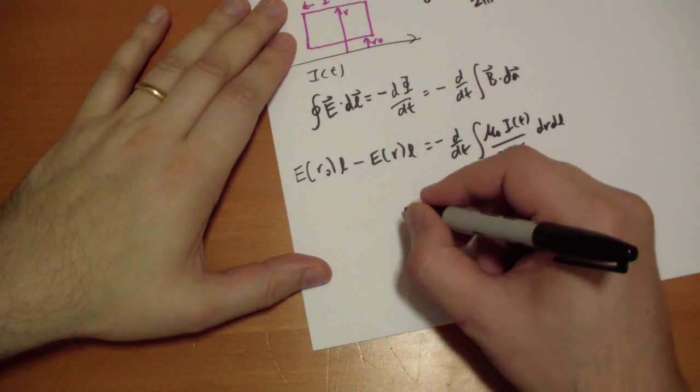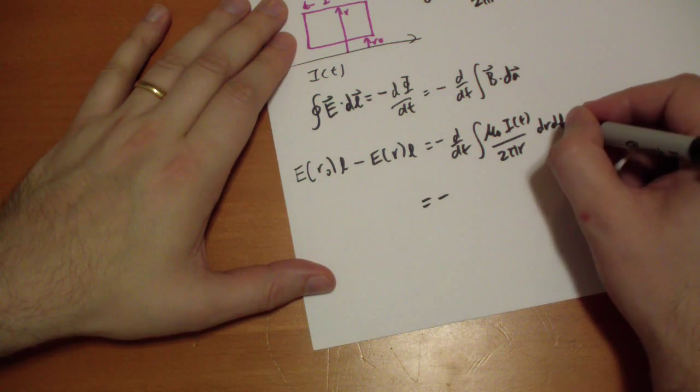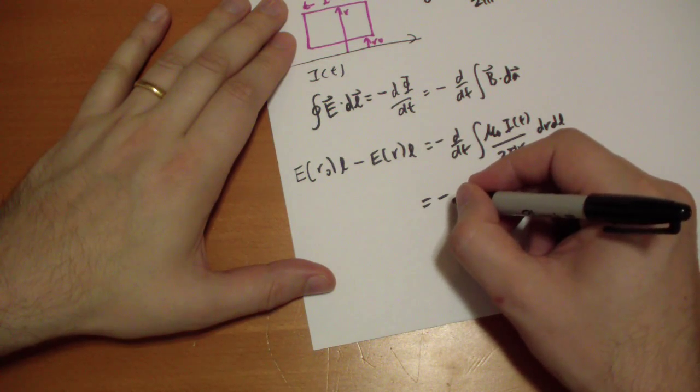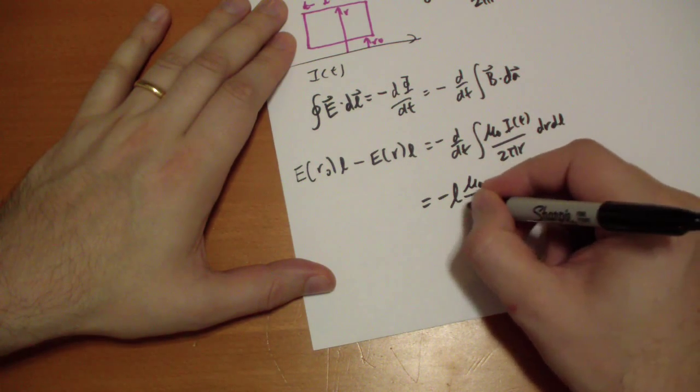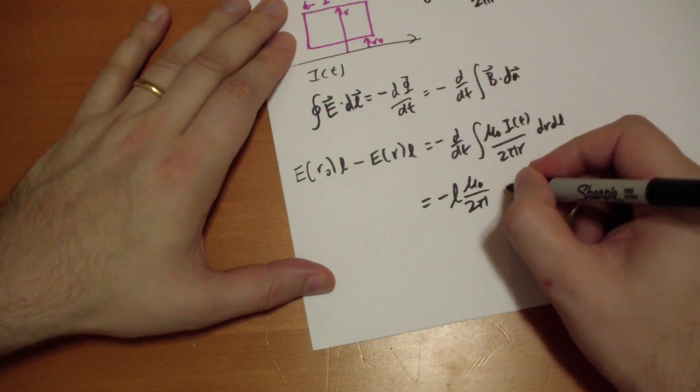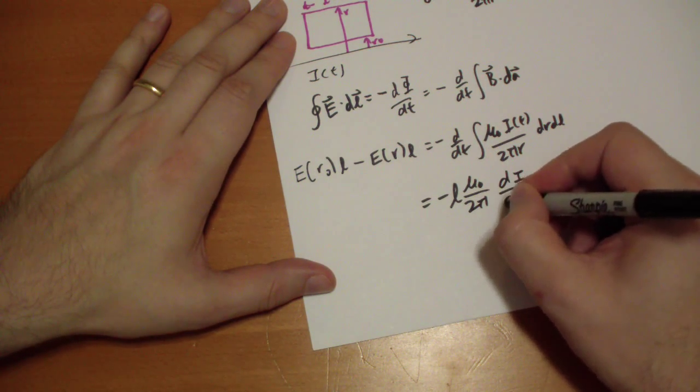So we can pull out some things. We can pull out a factor of l because l is not going to vary anyway, so we have a minus l, we have mu naught over 2 pi comes out, the I doesn't vary according to r, so we get d i by dt.